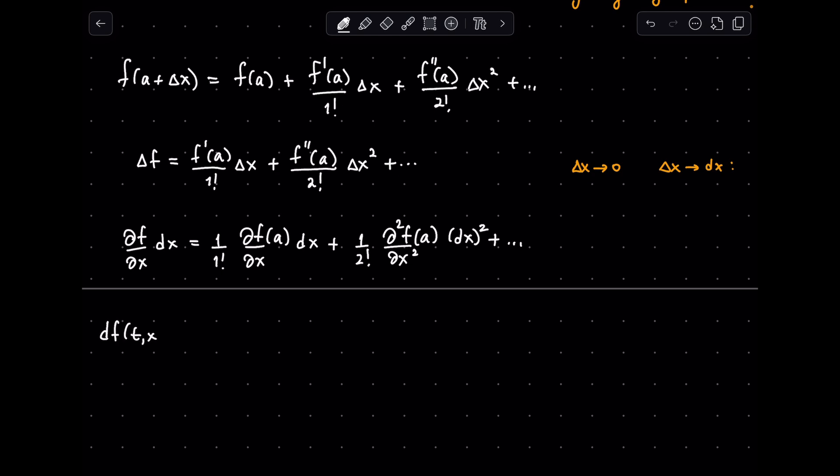Now we can express the total derivative of a function with respect to t and x using this Taylor expansion. So we substitute this expansion for t and x components, and let's combine the quadratic terms together.